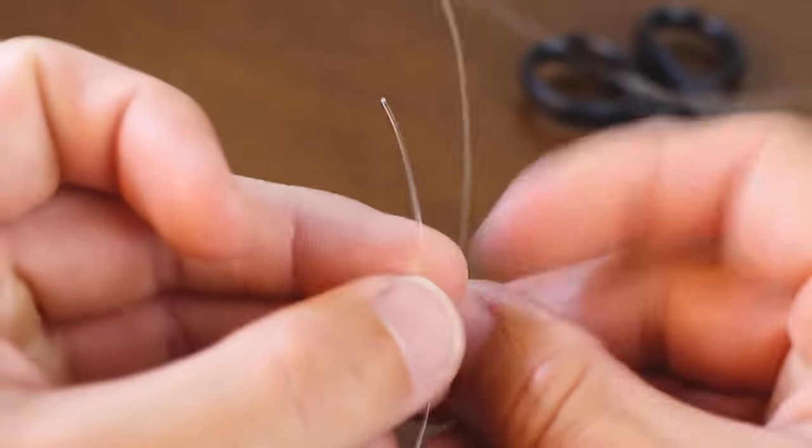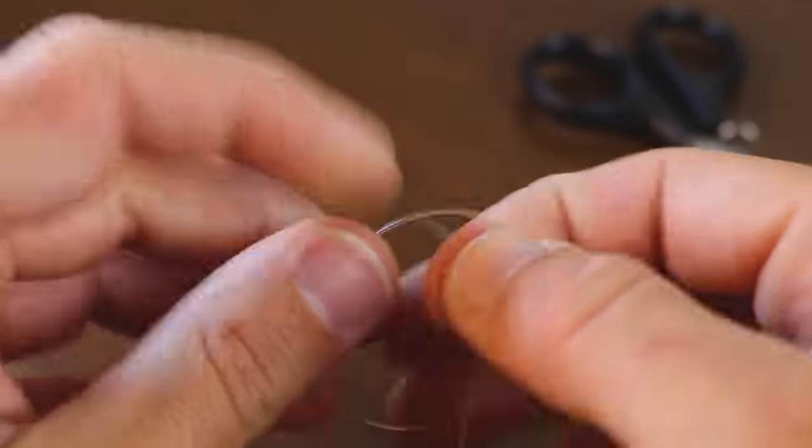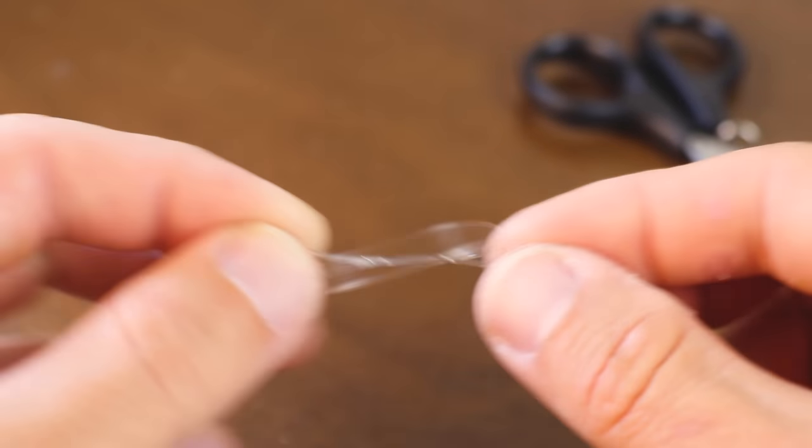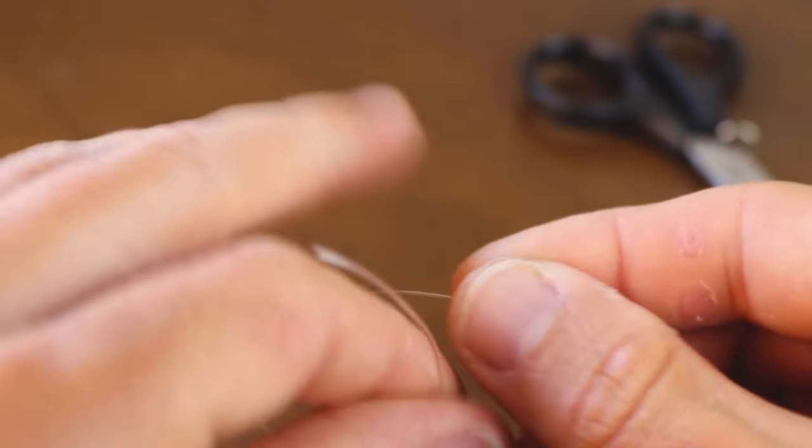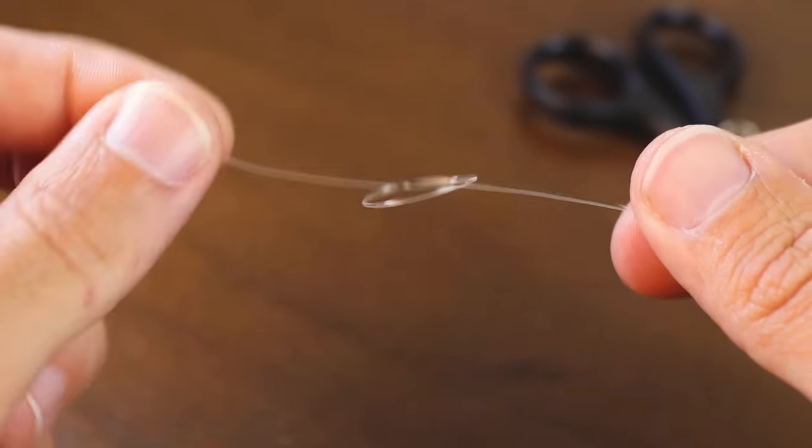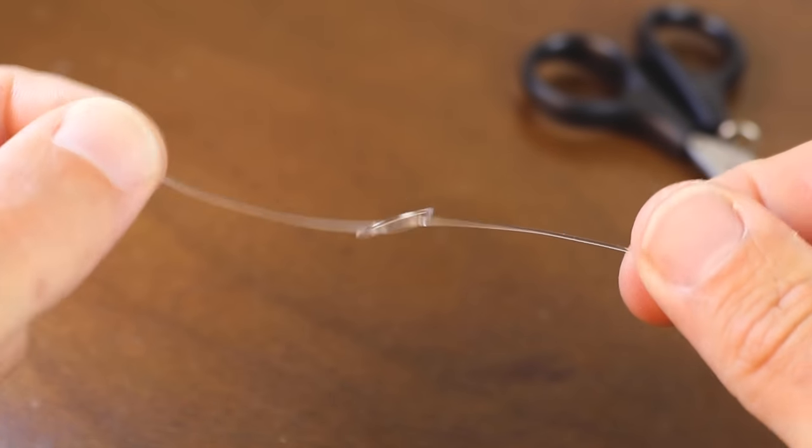So the first step here, regardless of whichever lure you're going to tie this knot onto, is to create the initial loop for your loop knot. All I did there was take the tag end, double it over the main line, run it back through that initial loop, and you end up with one of these small loops here.